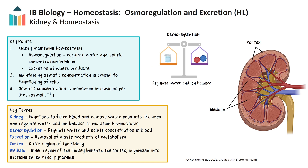Let's begin by thinking about how the body keeps its internal conditions stable — this is called homeostasis. One of the most important organs in maintaining homeostasis is the kidney. The kidneys perform two closely related functions: osmoregulation, which means regulating the amount of water and solutes in the blood to keep the internal environment balanced; and excretion, the removal of waste products such as urea, formed from the breakdown of amino acids. Maintaining the correct osmotic concentration in the blood is crucial — if it is too high or too low, cells may become dehydrated or swell, disrupting normal cellular function. Osmotic concentration is measured in osmoles per litre.